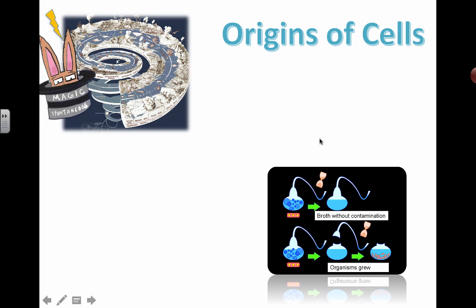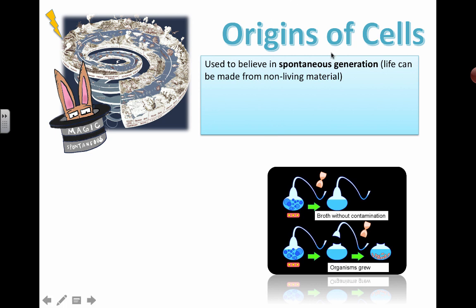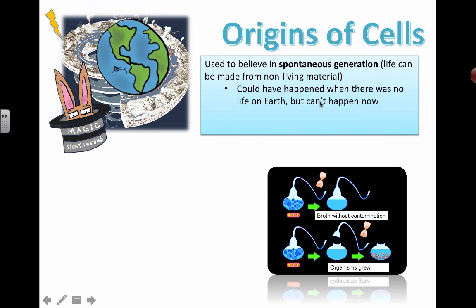Looking at the origins of cells — people used to think that you could make living stuff from non-living material. That term was called spontaneous generation. In some textbooks from several hundred years ago, they actually had recipes for making mice by simply leaving out garbage. But all it was was bad experimental design. They didn't close things off, so mice, bacteria, and fungus were able to get in. They weren't well-controlled experimental conditions.